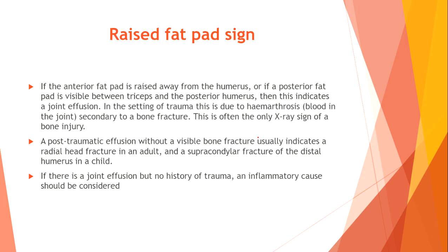Raised fat pad sign. If the anterior fat pad is raised away from the humerus, or if a posterior fat pad is visible between the triceps and the posterior humerus, this indicates a joint effusion. In the setting of trauma, this is due to hemarthrosis — blood trapped in the joint capsule secondary to a bone fracture. This is often the only extra sign of a bone injury. A post-traumatic effusion without visible bone fracture usually indicates a radial head fracture in an adult, or a supracondylar fracture of the distal humerus in a child. If there is a joint effusion without history of trauma, an inflammatory cause should be considered.